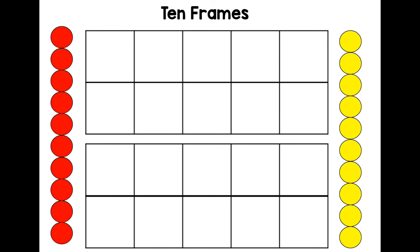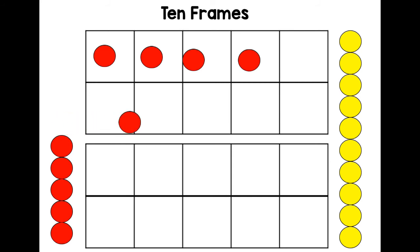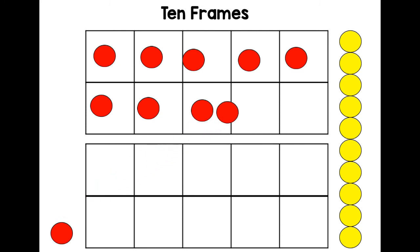On our 10 frame, we need to put our number of the day, which is 12. That's four. We don't need to count them because we know when it's full, that makes five. There's six and seven, eight, nine. We don't need to count because we know that a 10 frame has 10 in when it's full.